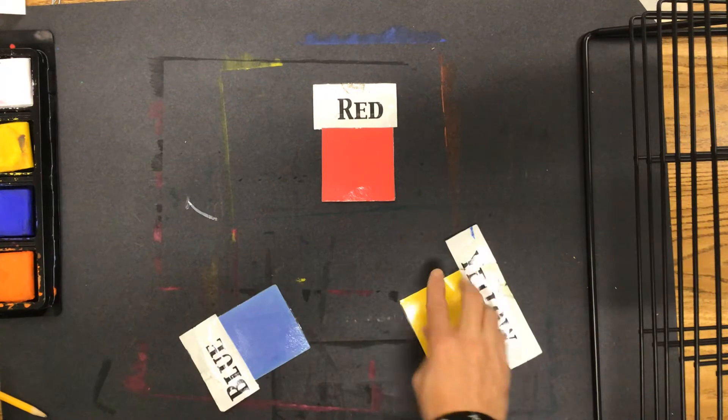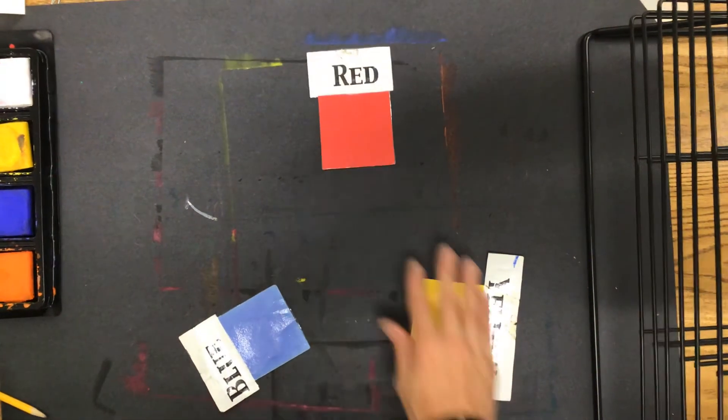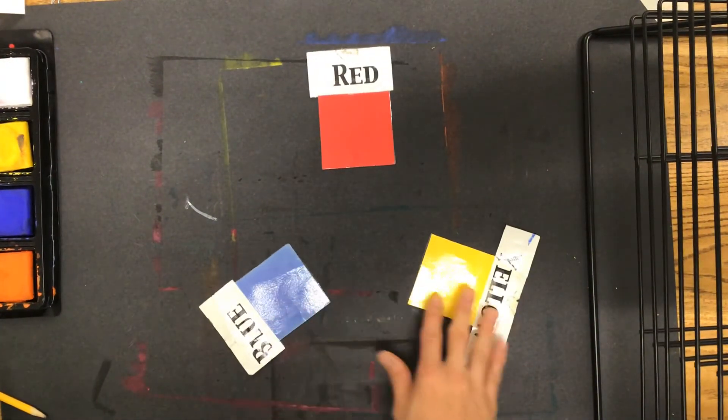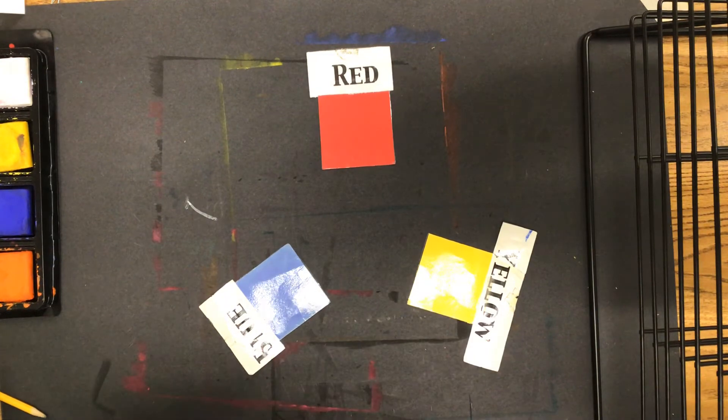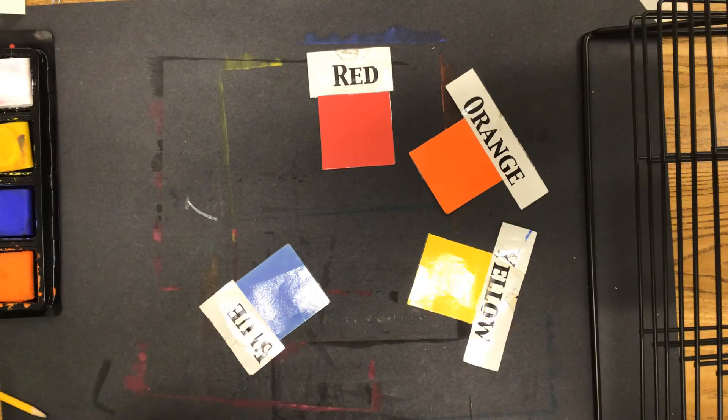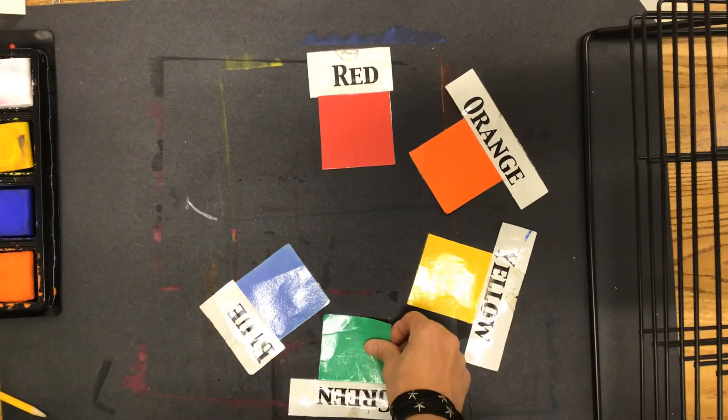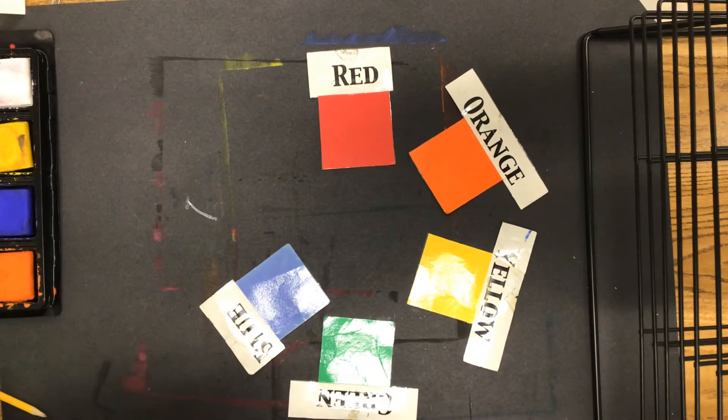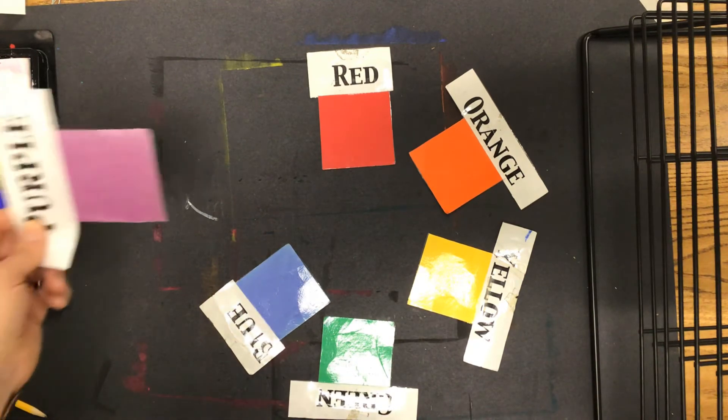we know that these primaries can be used to make secondaries. So red and yellow make orange. Blue and yellow make green. Red and blue make purple.